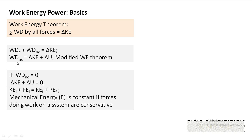If work done by non-conservative forces is zero, the change in mechanical energy is zero — mechanical energy is constant. Initial mechanical energy equals final mechanical energy: this is conservation of mechanical energy. It is applicable when forces doing work are conservative only. Work done by non-conservative forces is zero in two cases: either no non-conservative forces are acting, or displacement is perpendicular to the non-conservative force.